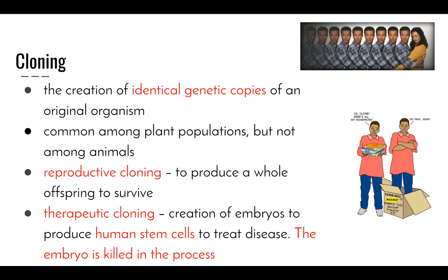Then we have cloning — the creation of identical genetic copies of an original organism. It's most common among plant populations but less common among animals due to the difficulty of cloning animal species. Reproductive cloning produces a whole offspring to survive, whereas therapeutic cloning creates embryos to produce human stem cells to treat disease, after which the embryo is killed. This has caused considerable controversy, as many believe that once an embryo is created through fusion of sperm and egg it is a living entity, and killing it is killing a life form.